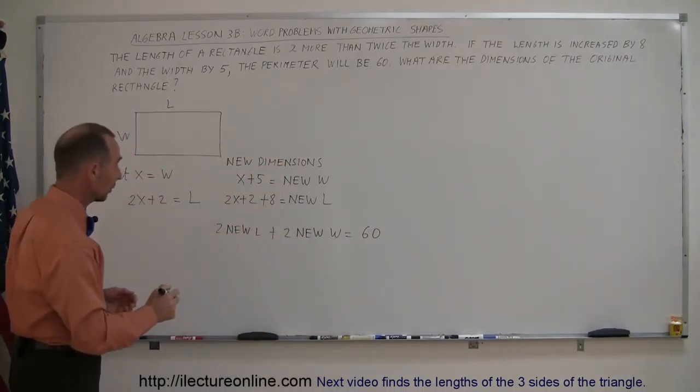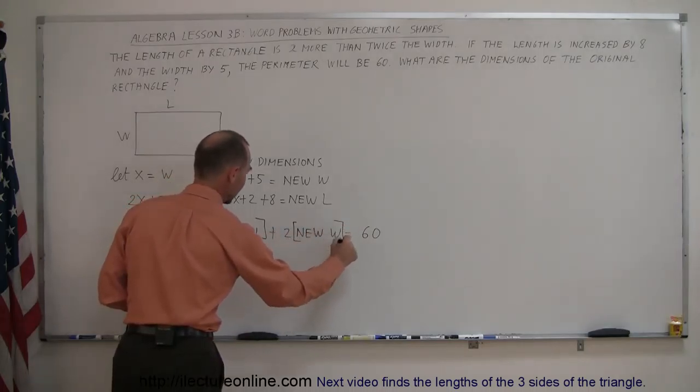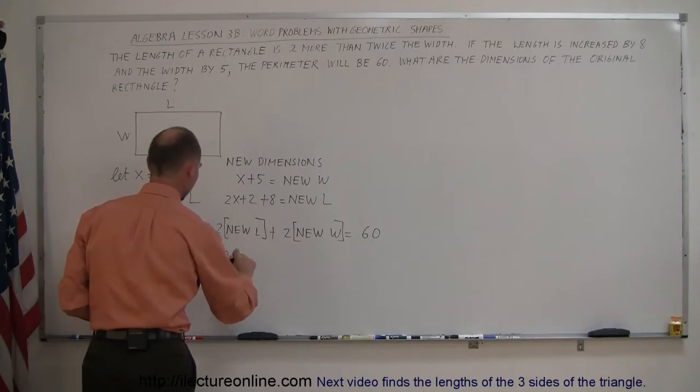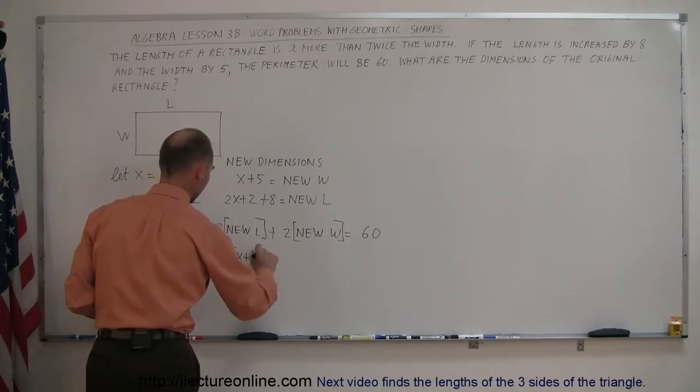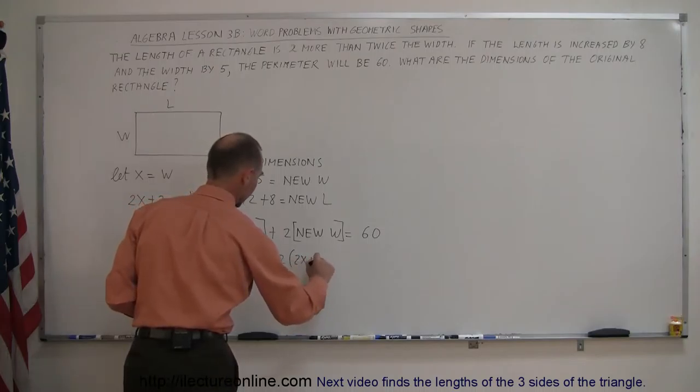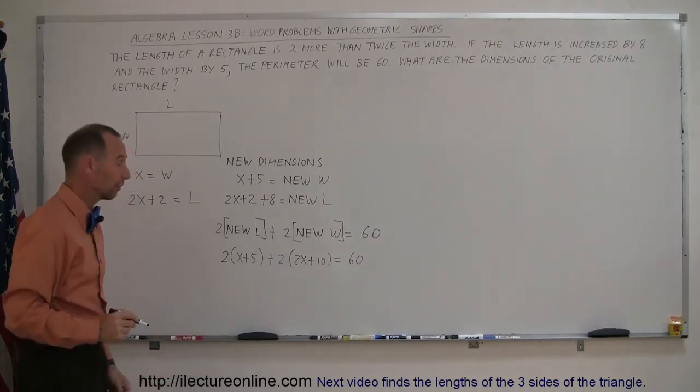And now we plug in what the new length and the new width are. So the new length is defined here by x plus five. And the new width here defined by 2x plus 10. And that equals 60. Now we have to solve this equation for x.